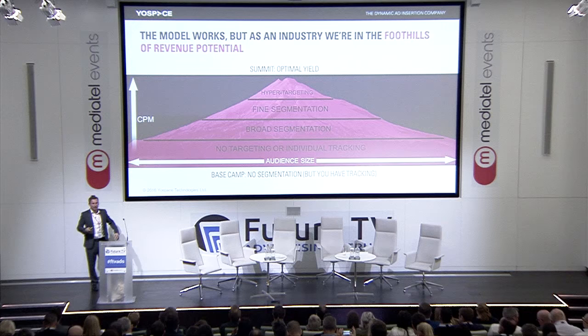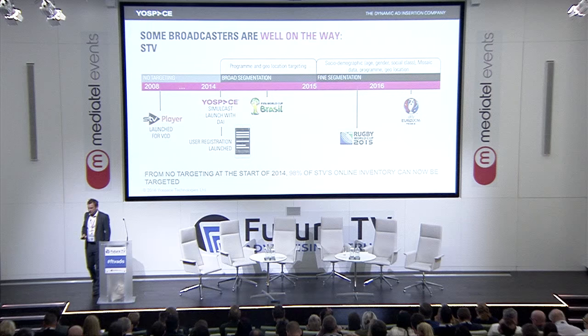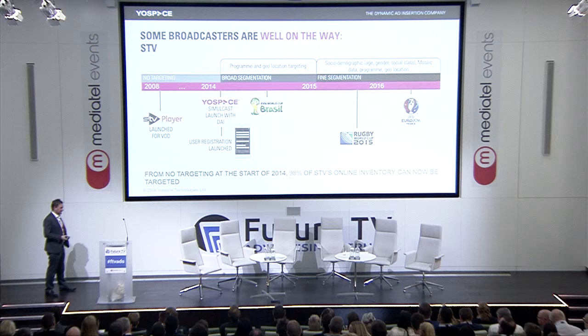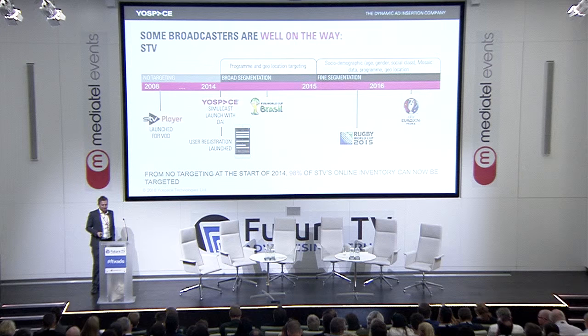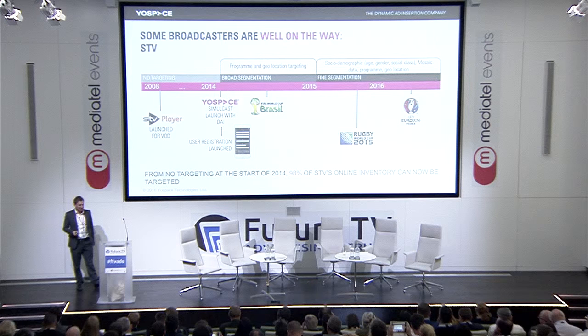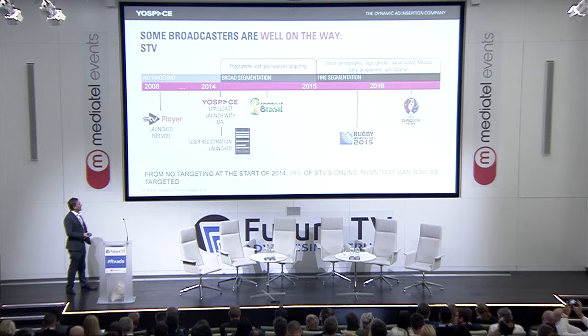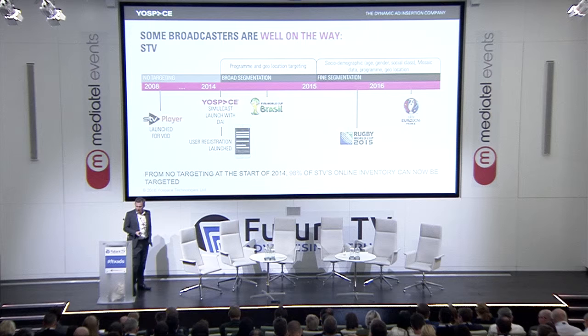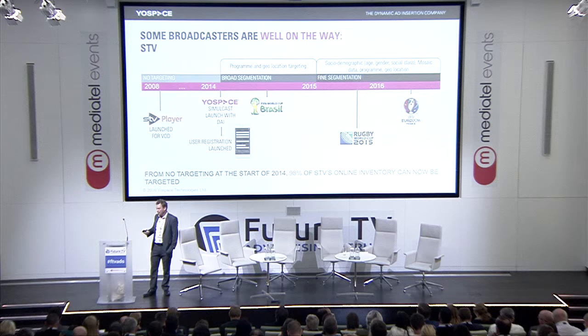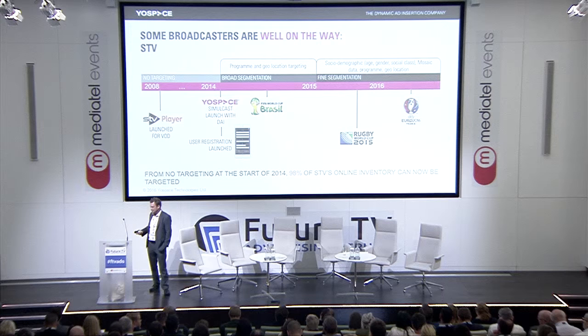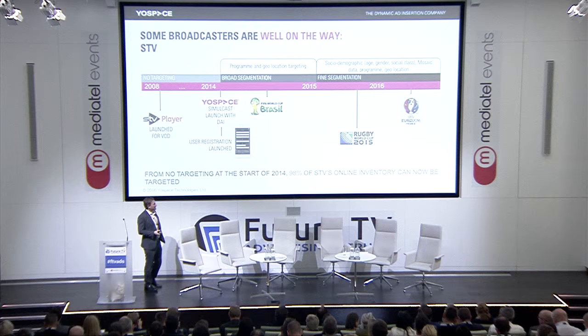Scottish Television were one of the first broadcasters that launched with us back in 2014. And really, all they had at the start was very broad segmentation, akin to that which you would do in normal traditional linear television — geolocation and program-based targeting. By launching with us, they also added user registration and were able to build up first-party data to provide demographic mosaic-type targeting. So relatively fine segmentation was deployed in the Rugby World Cup and Euro 2016.